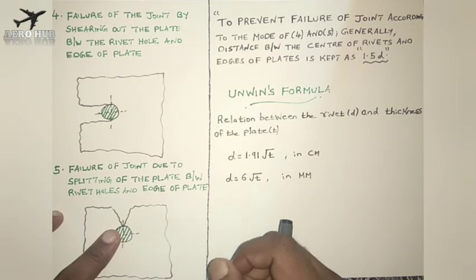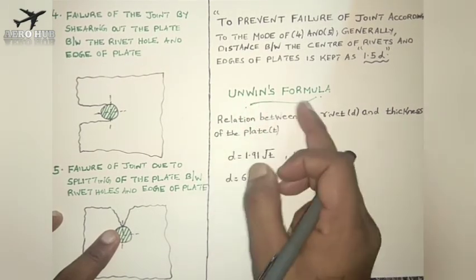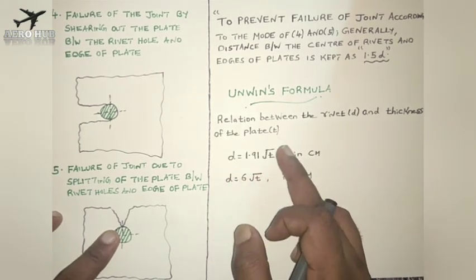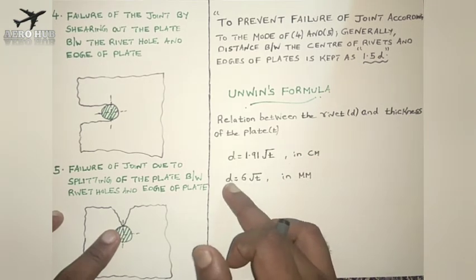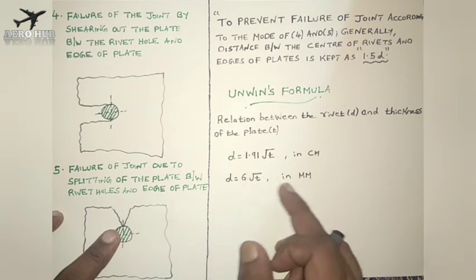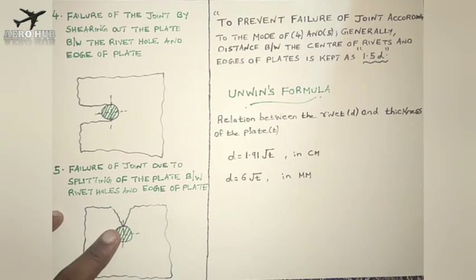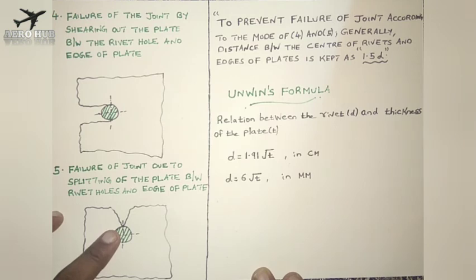Now we will see the relationship between the rivet diameter and the thickness of the plate. This is called Unwin's formula, and the relation is d equals 1.91 times the square root of t (in centimeters). Mostly we use d equals 6 times the square root of t (in millimeters). This formula is applicable while solving problems. In the next lecture, we will see how to calculate the efficiency of a rivet and also start some numerical problems. That's all about this lecture. Thank you for listening. Take care.